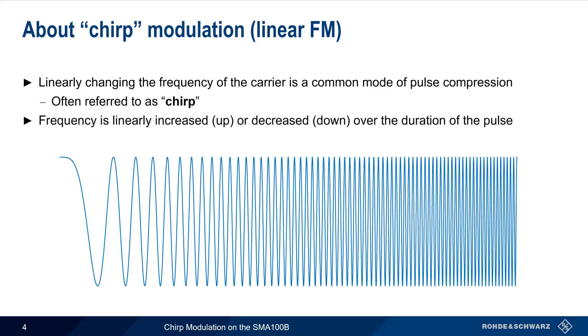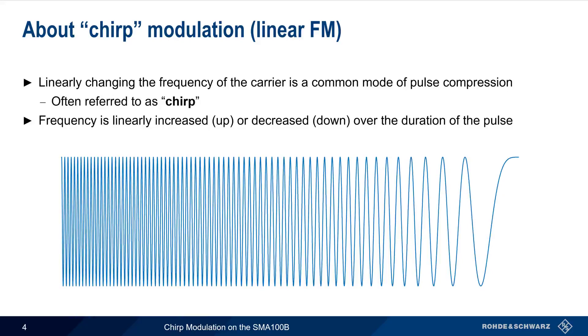In chirp modulation, the frequency can be either linearly increased upward, as shown here, or downwards over the duration of the pulse.